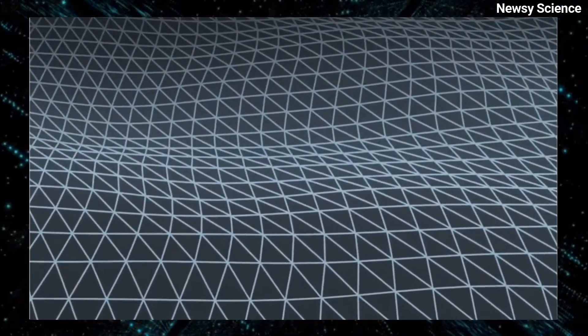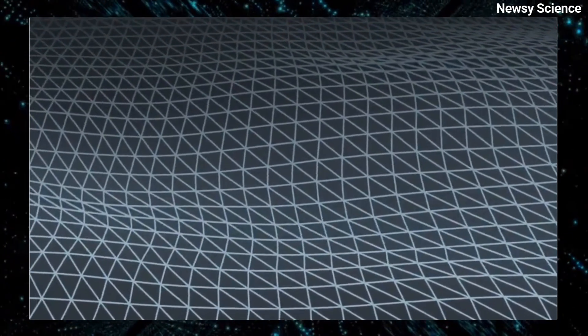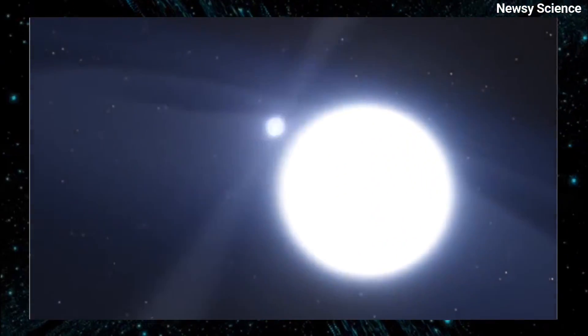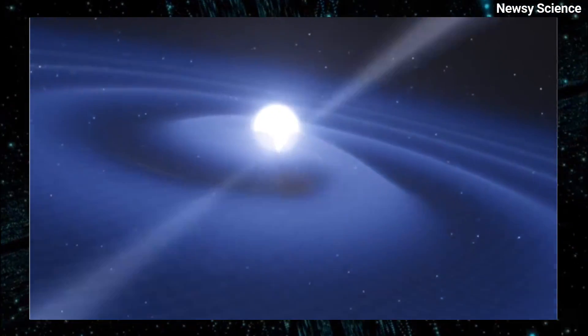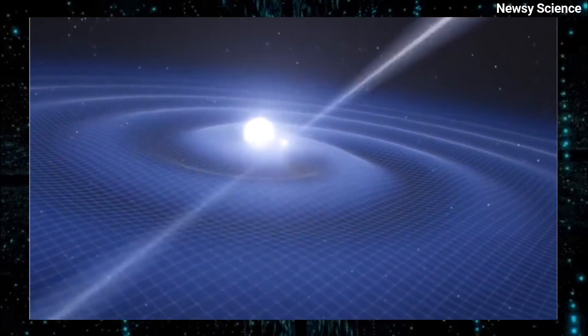This space-time fabric is not rigid and can be curved by the presence of massive objects. Because of the curvature of space-time, objects move in a curved path rather than a straight line, which is the basis of gravity.